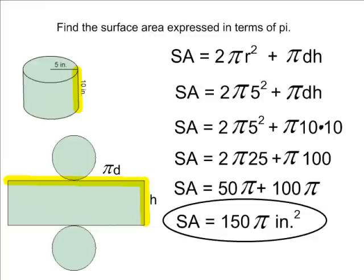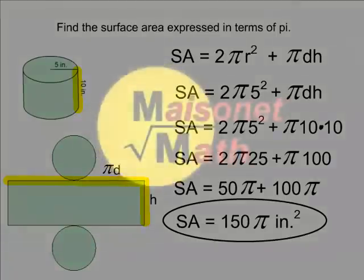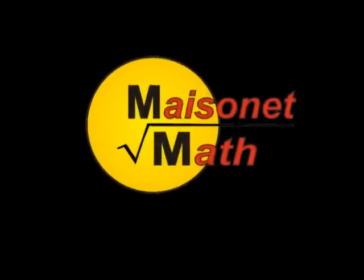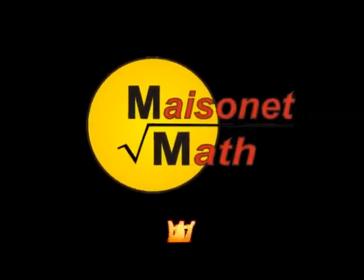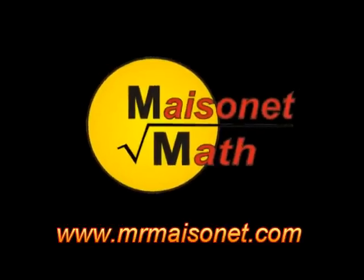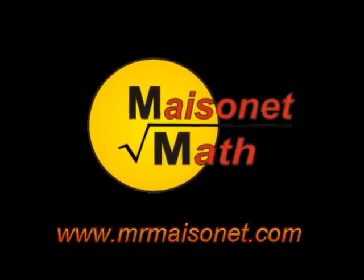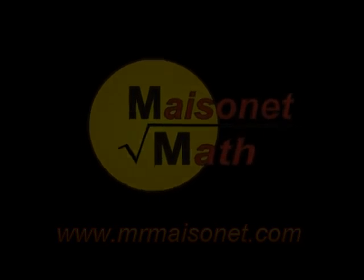But because the problem asked us to express in terms of pi, we are going to leave our answer in terms of pi. And that is how you find the surface area of a cylinder.